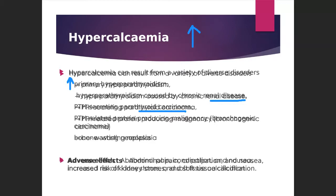Bone wasting means the bone becomes weak. Osteoporosis is one type of bone wasting neoplasia. The adverse effects of hypercalcemia include abdominal pain, nausea, vomiting, constipation, formation of kidney stones, and calcification of soft tissues — that is, soft tissues become calcified.